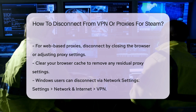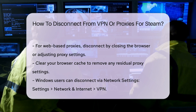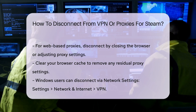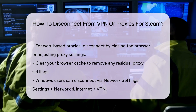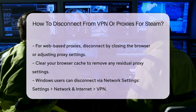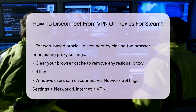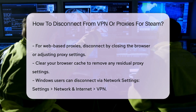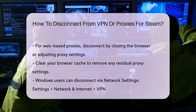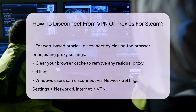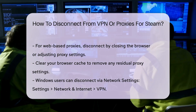For Windows users, you can also disconnect from a VPN through the network settings. Go to Settings, then Network and Internet, and select VPN. From there, you can disconnect the active connection.